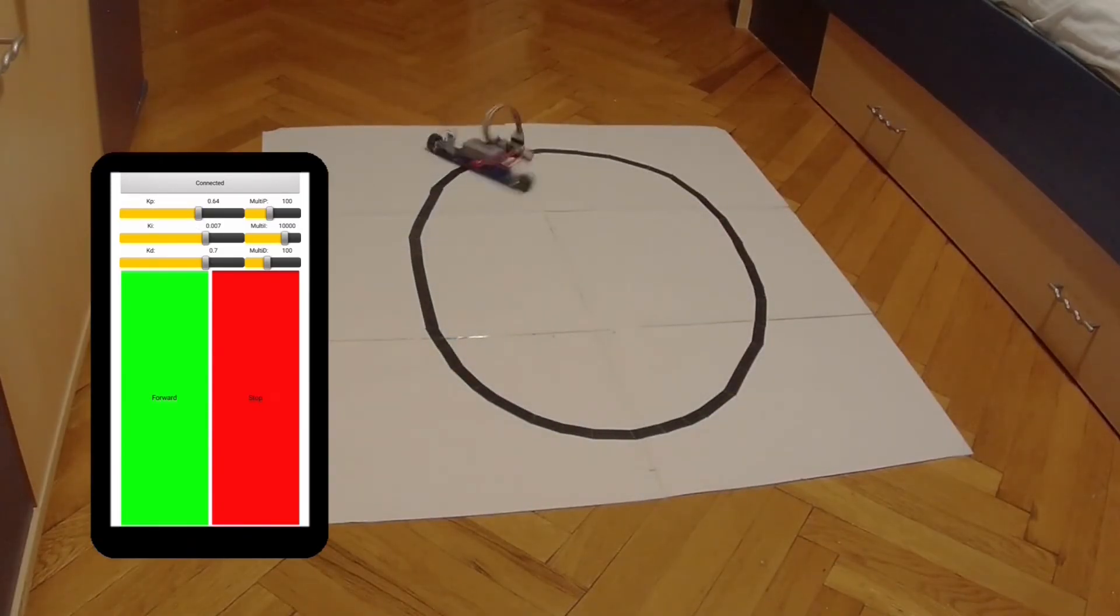As it can be seen, the line follower will try to get to that point, resulting in oscillations.